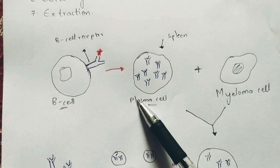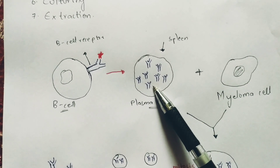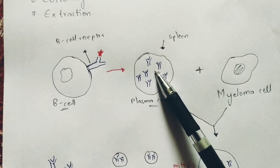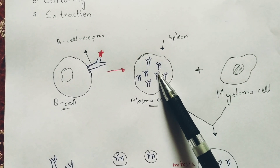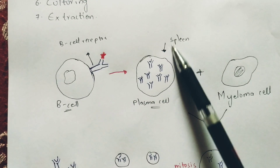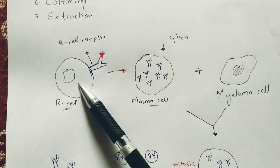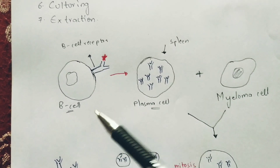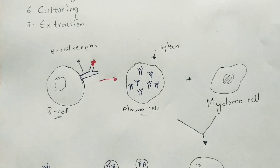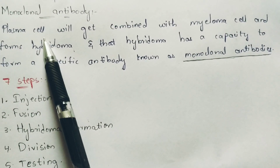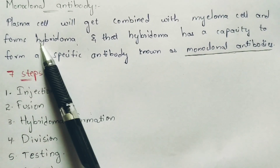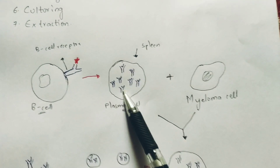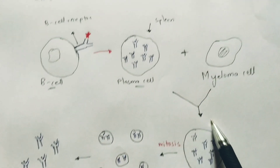This plasma cell has a capacity to form antibodies. From where this plasma cell has been formed? From the spleen — that's nothing but the B cell has been transformed into plasma cell, so we can say it has been protruded out from the spleen. The definition states that plasma cell will get combined with the myeloma cell and forms hybridoma cell.